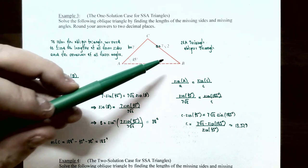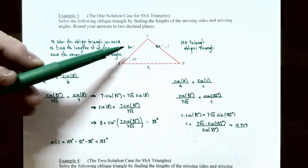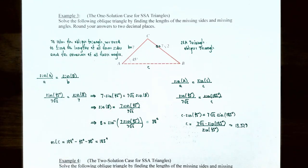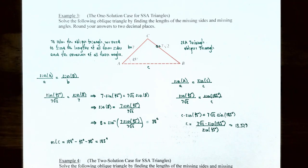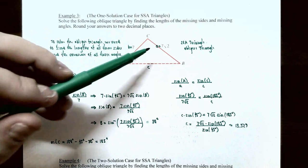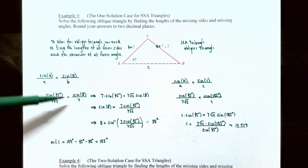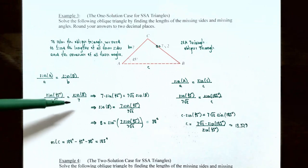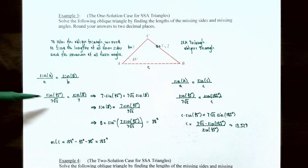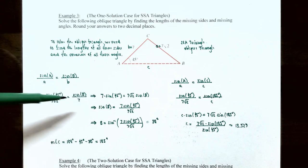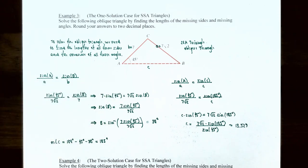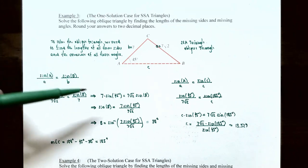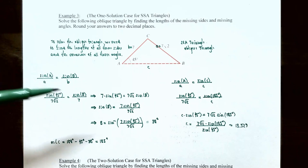Let's use the law of sines to find angle B, since we have side B's length and we have angle A and the length of side A. So: sin(A)/a = sin(B)/b. With A = 45°, a = 7√2, and b = 7, this gives sin(45°)/(7√2) = sin(B)/7. Cross-multiplying: 7·sin(45°) = sin(B)·7√2. Dividing both sides by 7√2: sin(B) = 7·sin(45°)/(7√2).